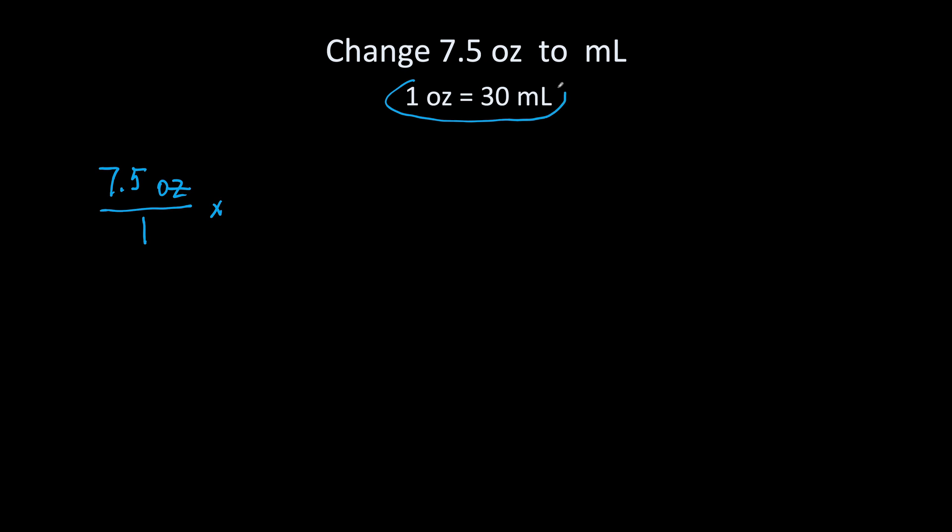You are going to take this conversion factor. 1 ounce is equal to 30 milliliters and you are going to write it here as a fraction in such a way so your ounces cancel out.